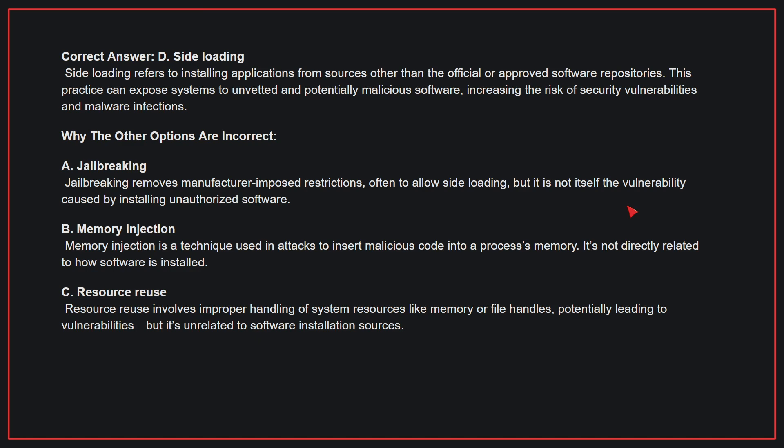Why the other options are incorrect: A. Jailbreaking removes manufacturer-imposed restrictions, often to allow sideloading, but it is not itself the vulnerability caused by installing unauthorized software. B. Memory injection is a technique used to insert malicious code into a processor's memory and is not directly related to how software is installed. C. Resource reuse involves improper handling of system resources like memory or file handles, potentially leading to vulnerabilities, but it's unrelated to software installation sources. Therefore, the correct answer is D.